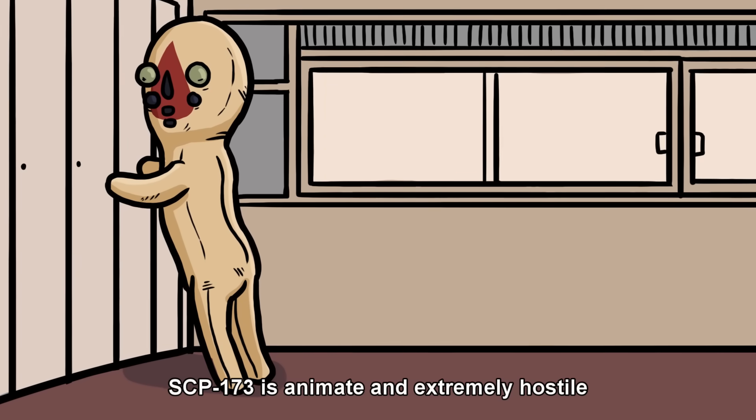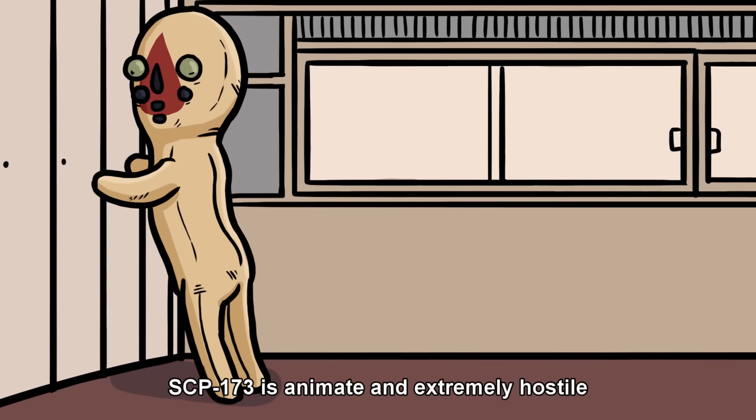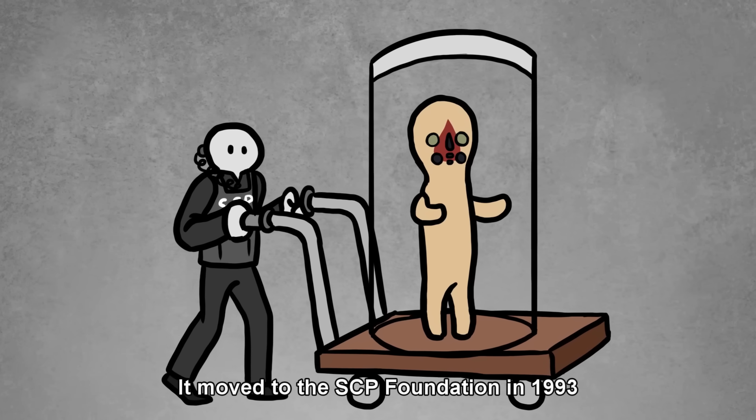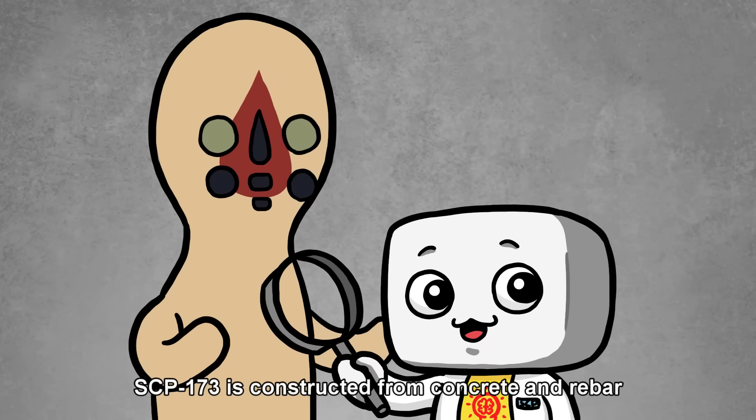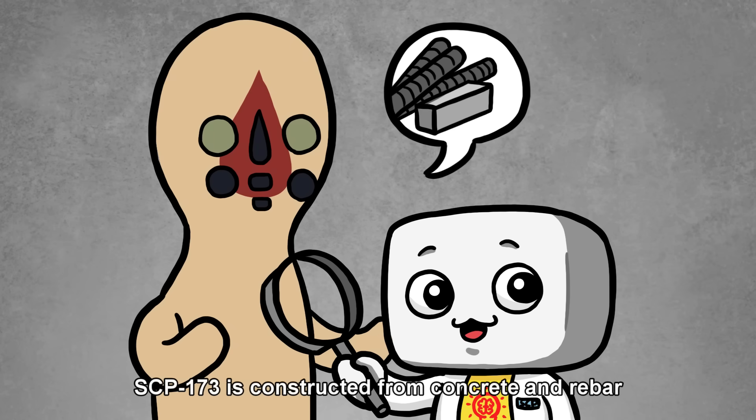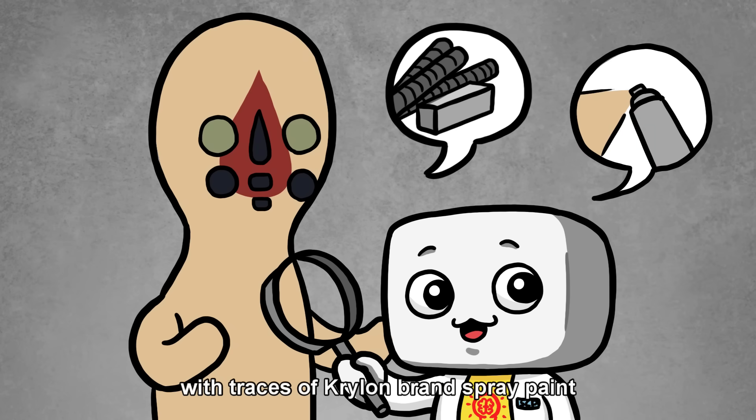SCP-173 is animate and extremely hostile. It moved to the SCP Foundation in 1993, but its origins are unknown to this day. SCP-173 is constructed from concrete and rebar with traces of Krylon brand spray paint.